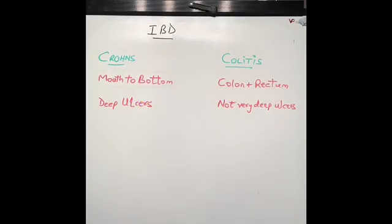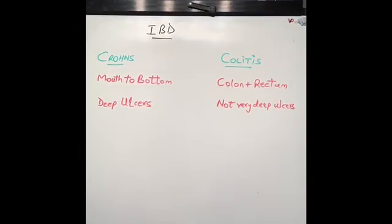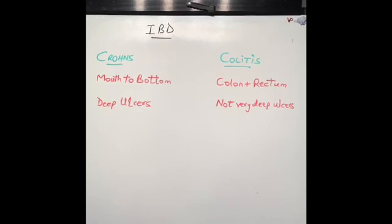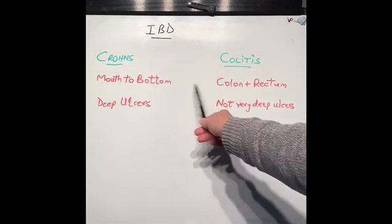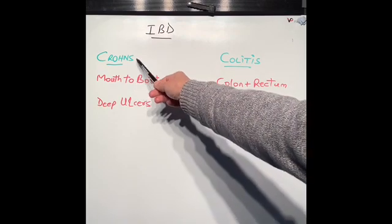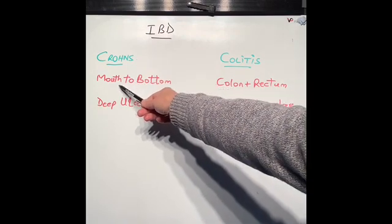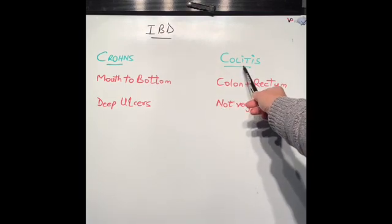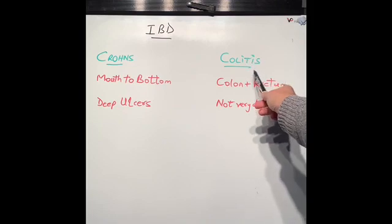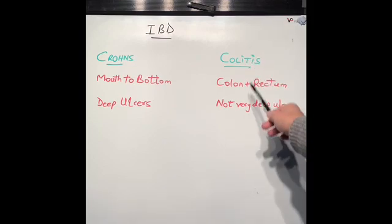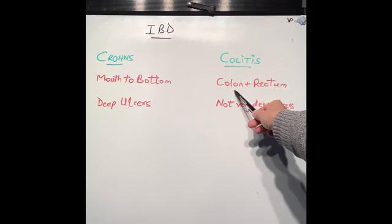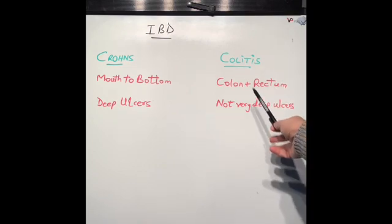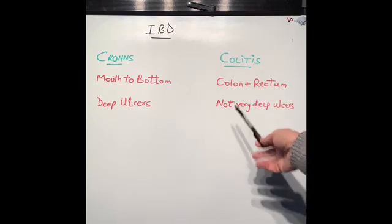First, we'll look at the difference between Crohn's disease and colitis, and after that we will talk about the similarities between them. The first difference is that Crohn's disease can happen anywhere from the mouth all the way to the anus, whereas colitis, as the name suggests — colitis meaning colon — affects only the colon, which is the large bowel, and the rectum, which is the bottom end of the bowel.